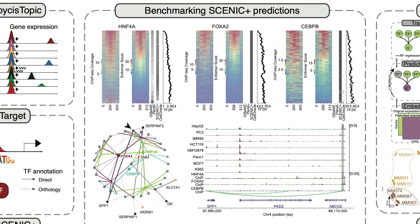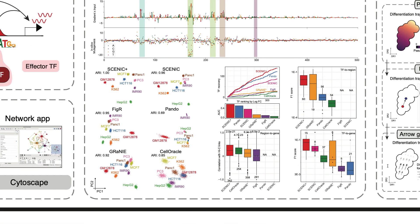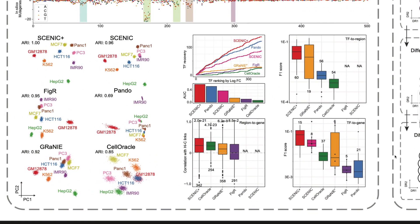We benchmarked the predictions made by ScenicPlus using publicly available data from ENCODE. ScenicPlus is able to prioritize target regions of transcription factors with high ChIP-seq signal. These target regions are highly cell type specific and are therefore good enhancer candidates. Compared to other methods like Pando, Figr, Rani, and CellOracle, the networks inferred by ScenicPlus are better able to separate cell states, are more enriched for relevant transcription factors, and have a higher precision and recall for the prediction of target regions based on ChIP-seq and target genes based on transcription factor perturbation studies.